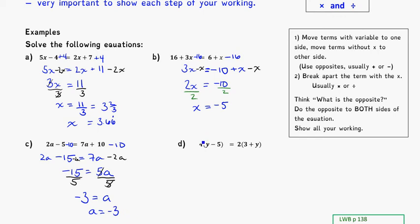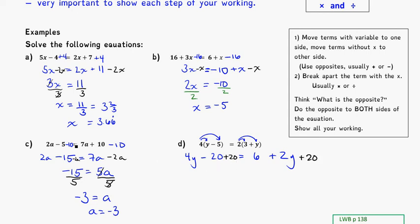Last example. I need to expand the brackets first. Multiplying the 4 through, I get 4y minus 20, watching the negative. On the other side, 2 times 3 is 6, and 2 times y is plus 2y. So moving things from one side to the next, I'll move the negative 20 to the other side. To cancel it out I'll add 20 to both sides. This becomes 4y, negative 20 plus 20 cancel, and I get 6 plus 20 is 26, plus 2y.